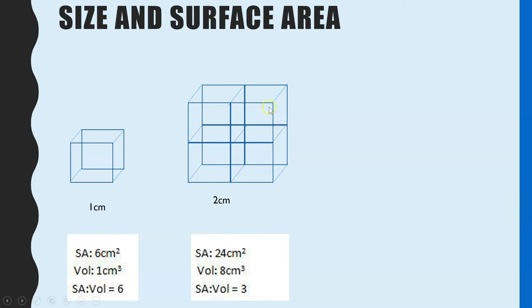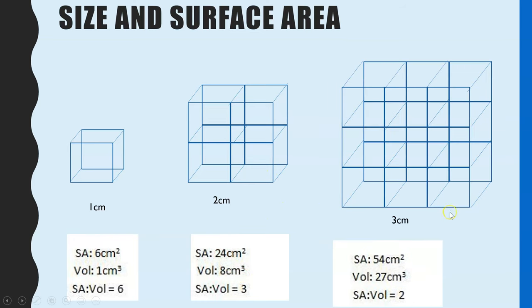So two times two times six gives us 24. The volume times in the width, the length and the height, which is two by two by two, which is eight. 24 divided by eight is three. And then same thing again, I've done for three centimeters.